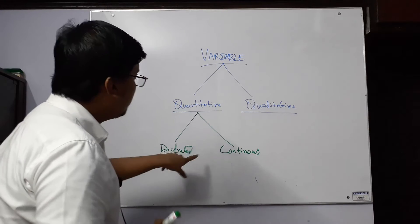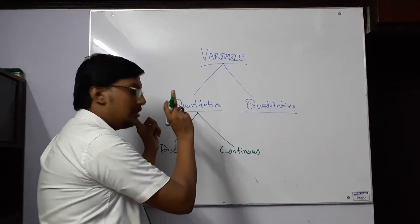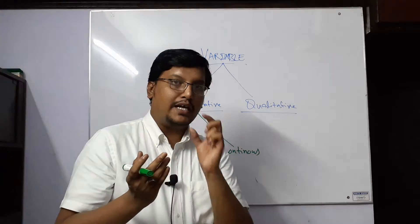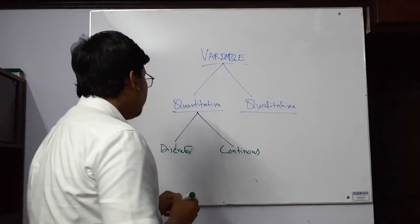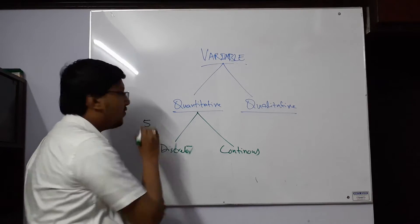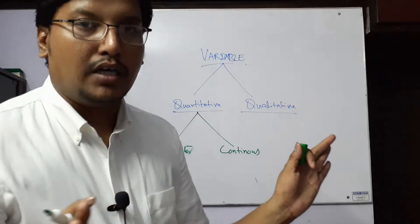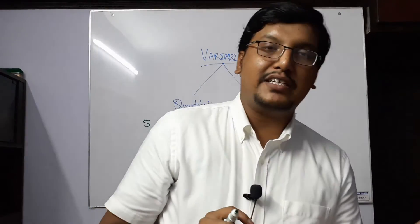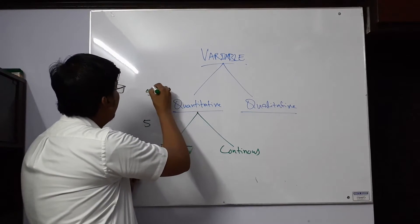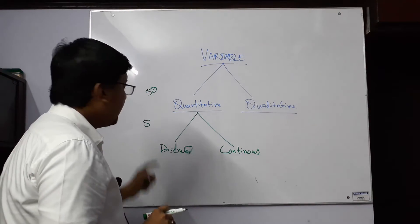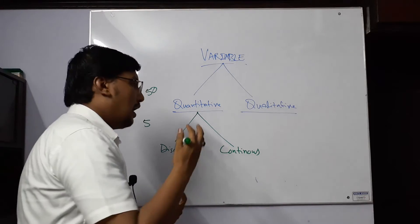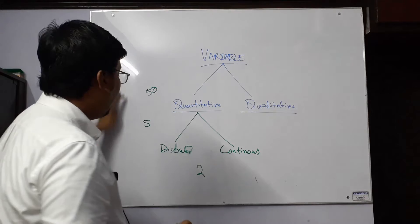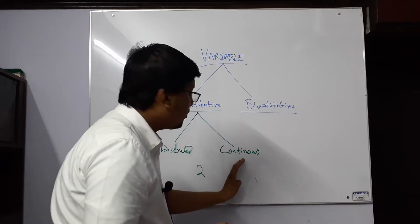Quantitative variables deal with numbers, but numbers of different categories. For discrete, we talk about whole numbers — complete numbers with a specific jump or break. For example, the number of classrooms: we have five classrooms, so five is a complete number — not 5.5 or 4.9. Similarly, if we say there are fifty pupils in a park, fifty is a complete number. Or if you say you have two shops, two is a complete number. These types of numbers are dealt with in discrete variables.